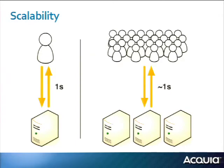Scalability is the ability of your site to go from one user to a hundred users, or a hundred users to a thousand users, and still have a predictable performance threshold. Predictable doesn't mean the same — a hundred users hitting your site is probably going to perform a little differently than a thousand users — but it's acceptable and it's predictable. That's what scalability is about.